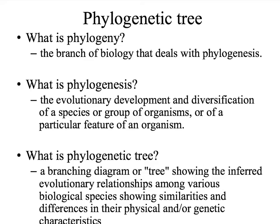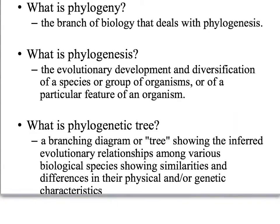What is phylogenesis? The evolutionary development and diversification of a species or group of organisms, or of a particular feature of an organism. What is the phylogenetic tree? A branching diagram or tree showing the inferred evolutionary relationships among various biological species, showing similarities and differences in their physical and or genetic characteristics.